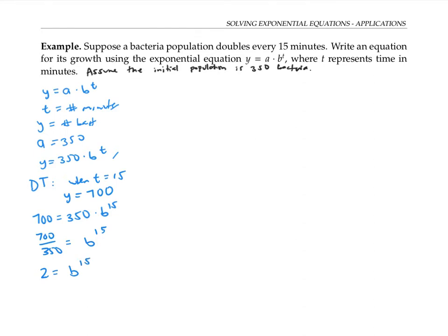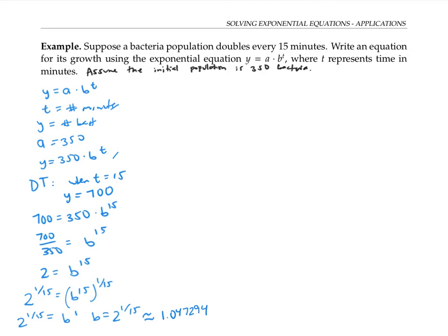To solve for b, I don't have to use logs here, because my variable is in the base, not in the exponent, so I don't need to bring that exponent down. Instead, the easiest way to solve this is just by taking the 15th root of both sides, or equivalently, raising to the 1/15 power. That's because if I take b to the 15, then raise to the 1/15, I multiply my exponents, giving me b to the one equals 2 to the 1/15. In other words, b is 2 to the 1/15, which as a decimal is approximately 1.047294. I like to use a lot of decimal places in these kinds of problems to increase accuracy, but the most accurate thing is to leave b as 2 to the 1/15.